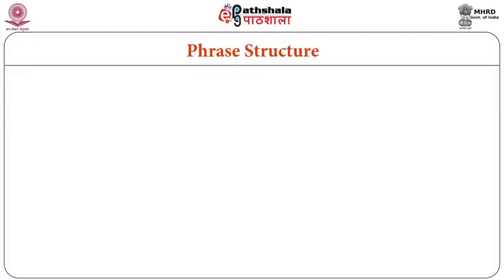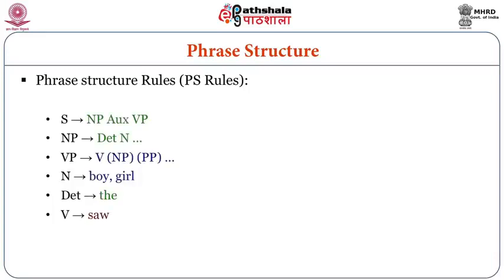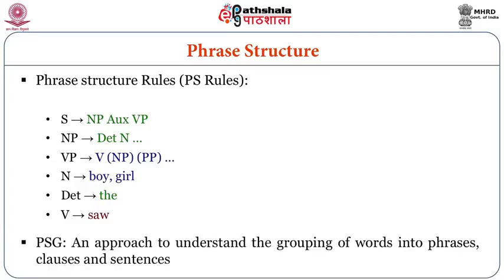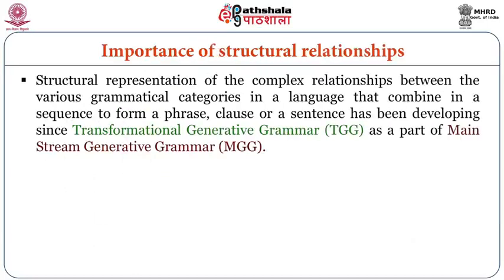What is the phrase structure? Phrase structure rules: S is for sentence where we have NP and VP. Then NP has determiner and noun. An approach to understand the grouping of words into phrases, clauses and sentences is shown. A structural representation of the complex relationships between grammatical categories has been developing since transformational generative grammar, popularly known as TGG, as part of mainstream generative grammar, known as MGG.